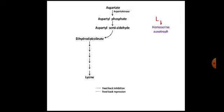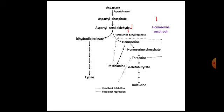Considering the possibility that the mutation will happen at the same loci — the genes associated with homoserine dehydrogenase enzyme — the second mutation will also occur in the genes associated with synthesis of homoserine dehydrogenase. What will happen is that the organism, due to the second mutation, will start production of homoserine dehydrogenase enzyme again. When it starts producing homoserine dehydrogenase enzyme, there will be synthesis of homoserine, methionine, threonine, and isoleucine.